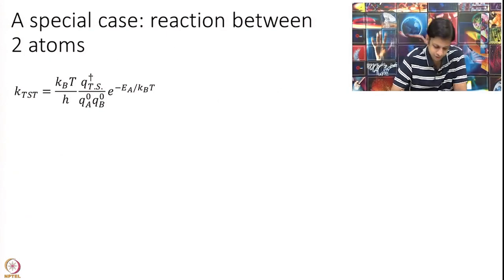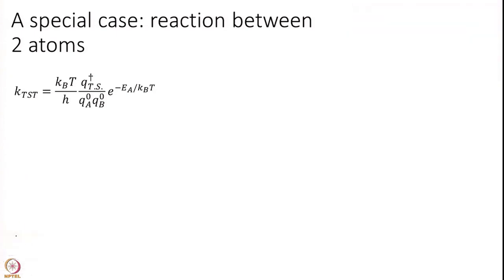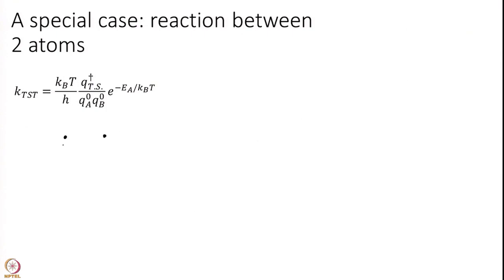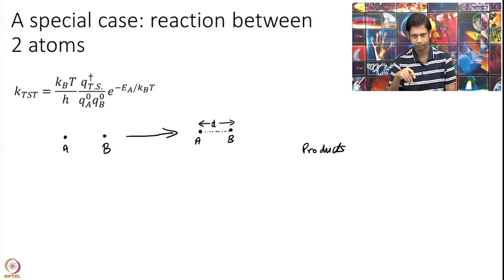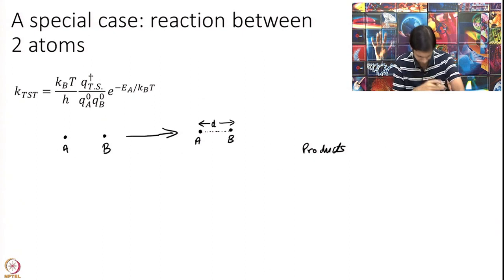Let us apply Transition State Theory to a special problem where the reactants are both atoms — atom A and atom B — going to some products. The transition state we assume is simply a linear structure with some distance D. A and B come close and the transition state is when they reach some critical distance D. This is not really a bond — the transition state is a maximum energy structure along the reaction coordinate.